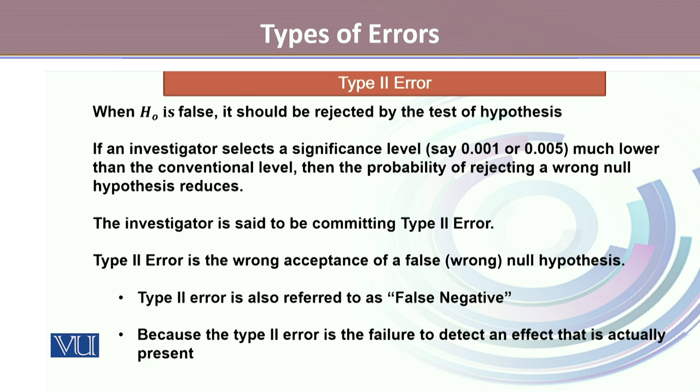Type II error is wrong acceptance of a false null hypothesis. Type II error is also referred to as false negatives, because Type II error is a failure to detect an effect that is actually present.